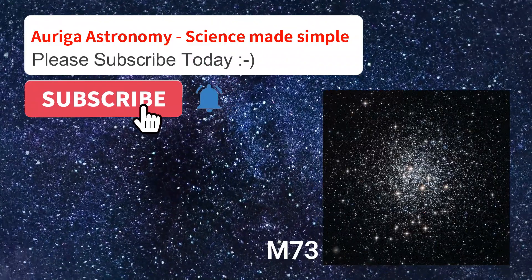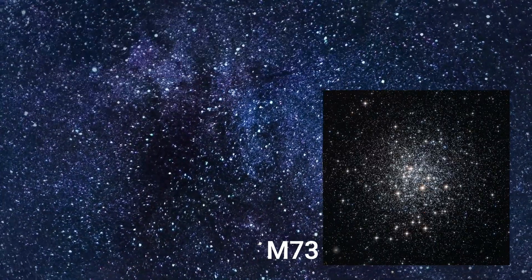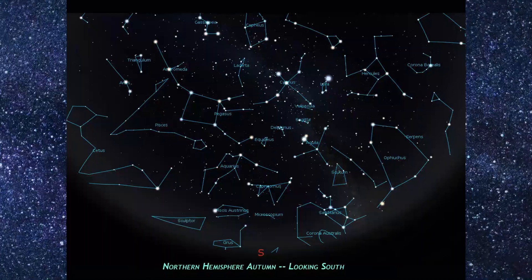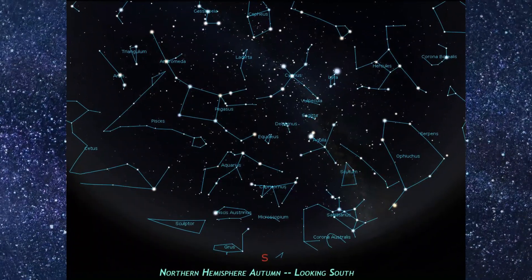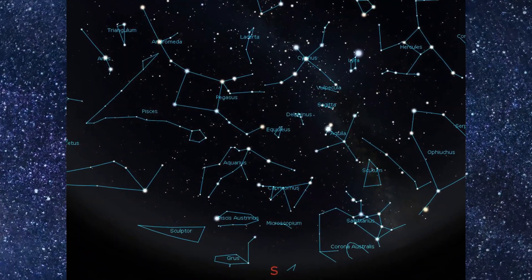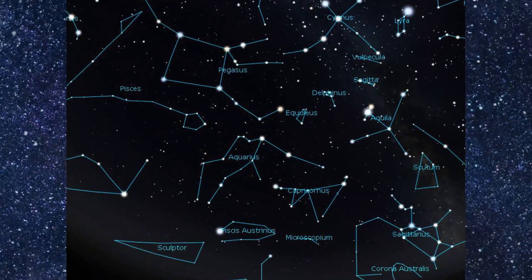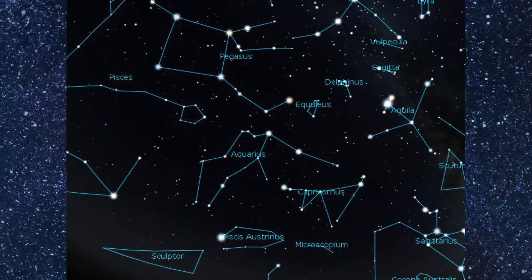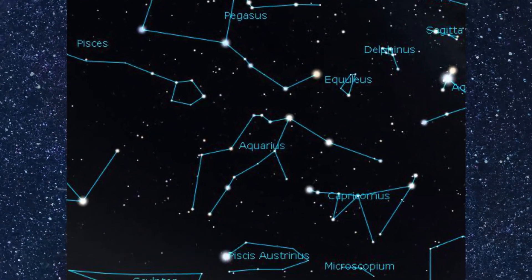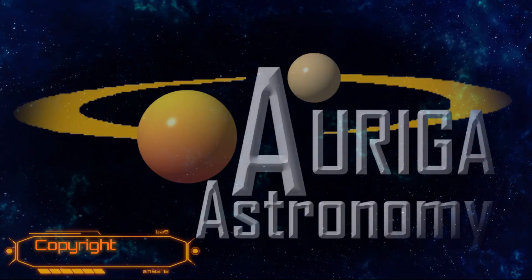So while Aquarius is quite an important zodiacal constellation, it's not very easy to see in the skies. I hope you enjoyed that little look at Aquarius — it's a very short look because it's not a particularly brilliant constellation to observe. Dark skies, and I'll see you next time. Bye for now.